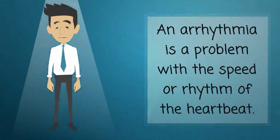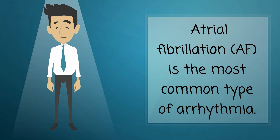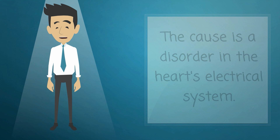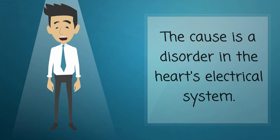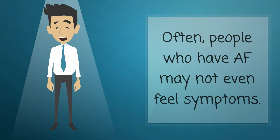An arrhythmia is a problem with the speed or rhythm of the heartbeat. Atrial fibrillation, AF, is the most common type of arrhythmia. It causes a disorder in the heart's electrical system. Often, people who have AF may not even feel symptoms.